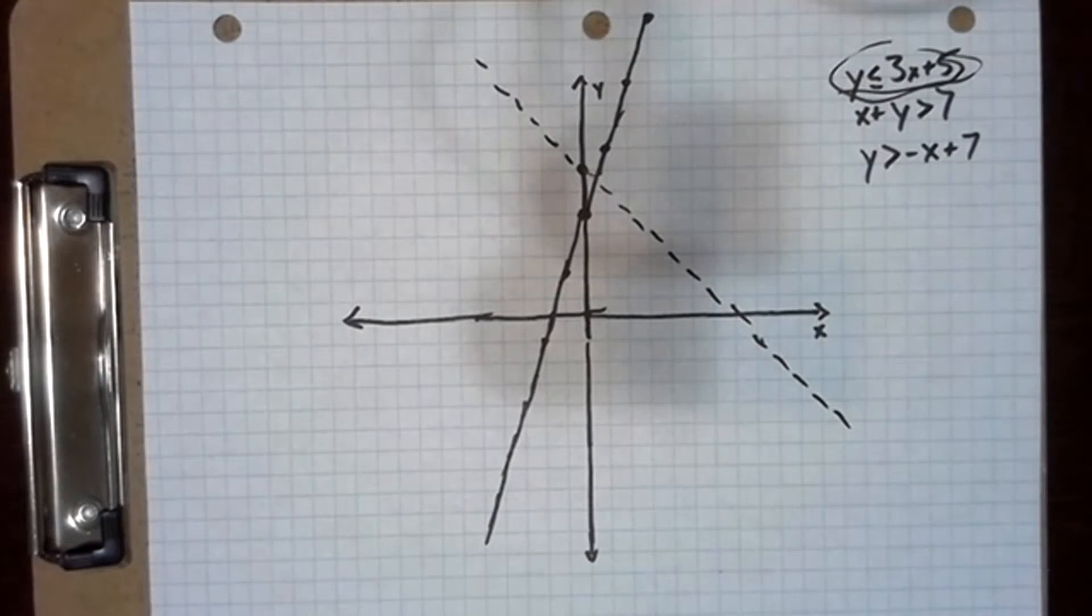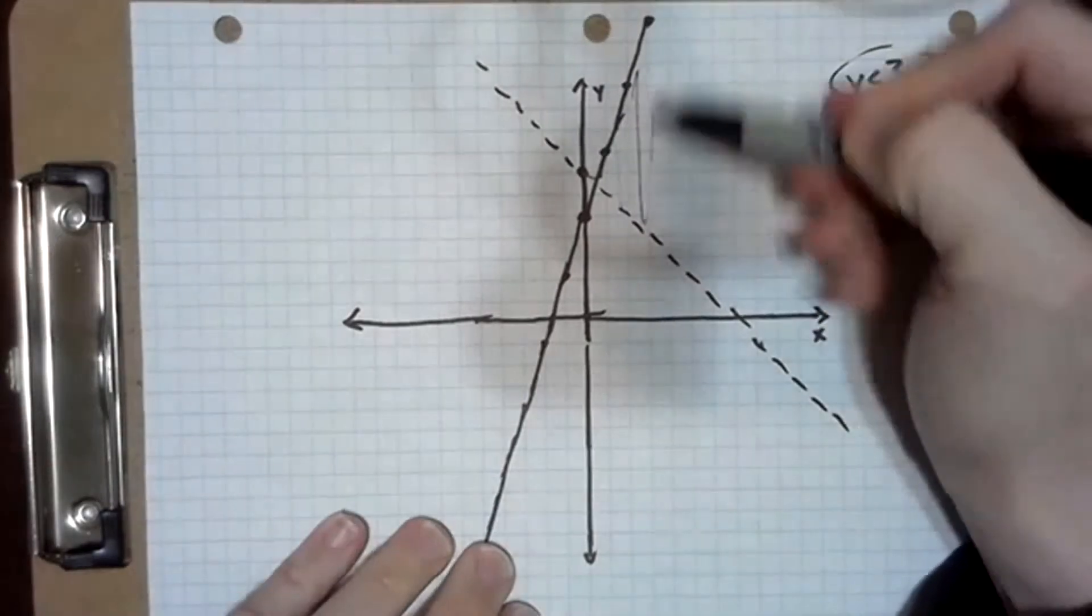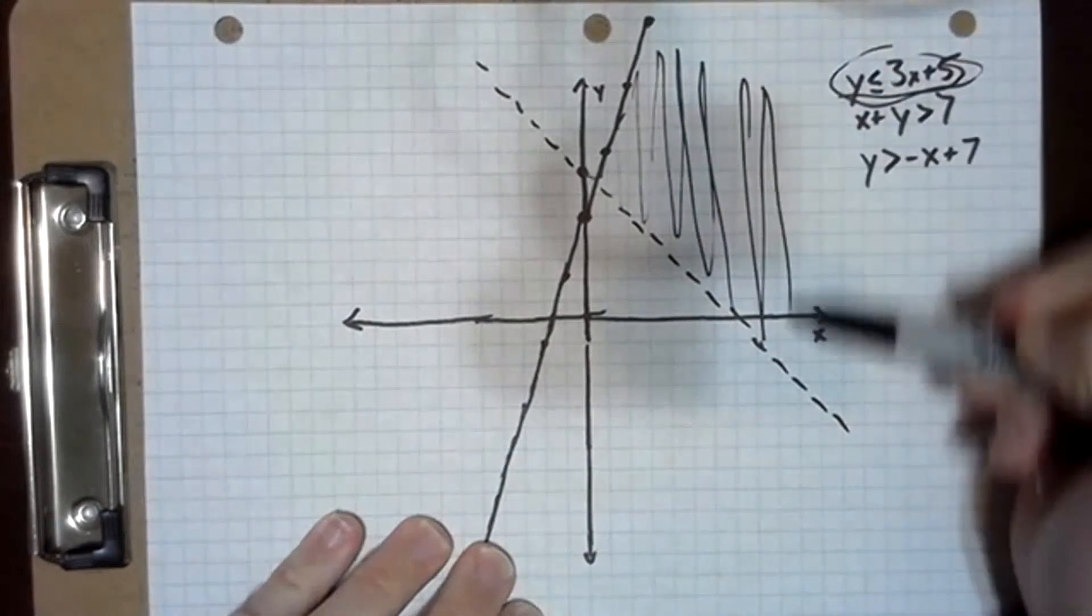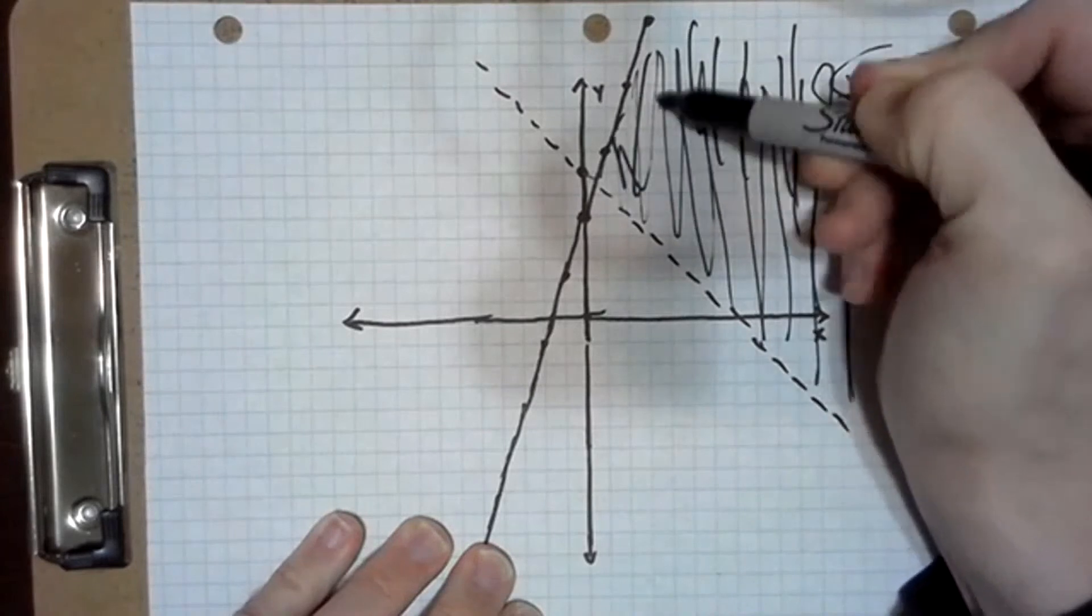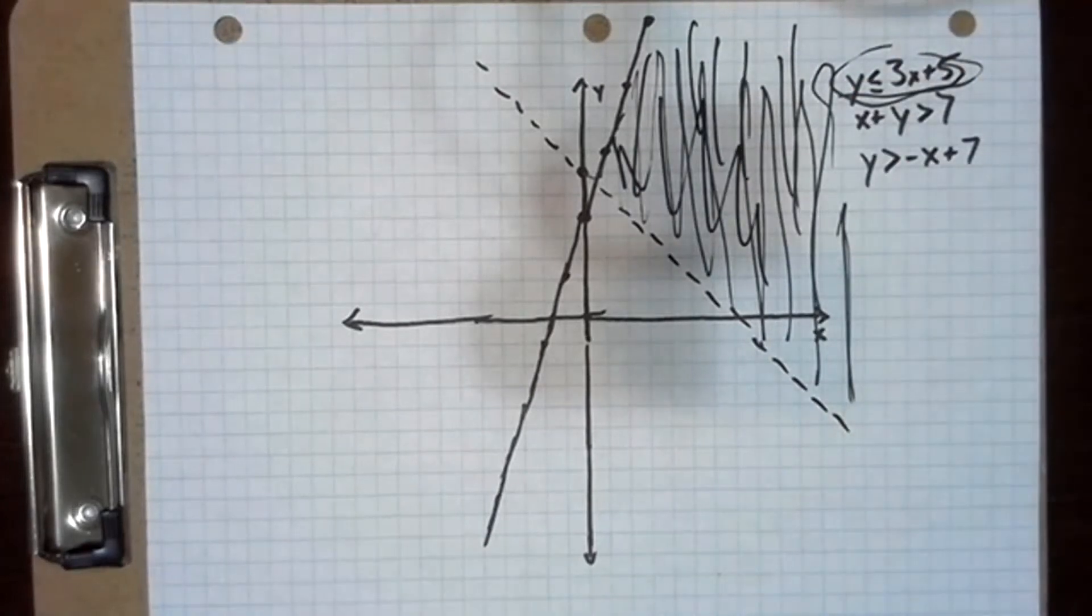So now we want to look at everything that is less than our solid line and greater than our dashed line, and that is everything in this region right here. So we just shade that portion and that's all we have to do. All right, that is it for this set of slides. Let me know if you have any questions.